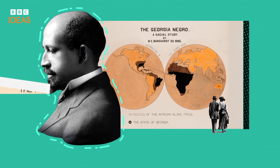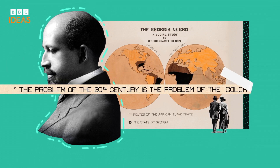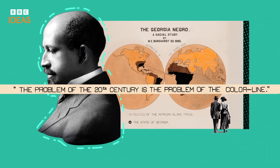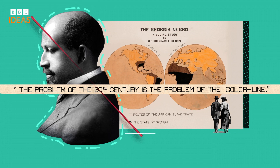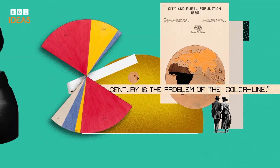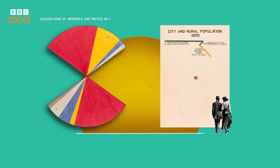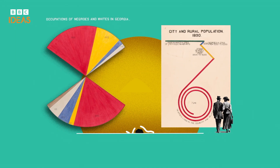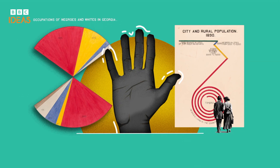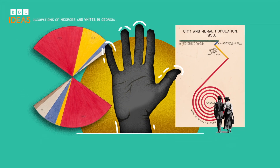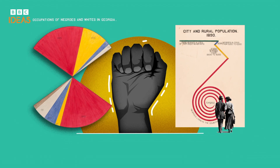Du Bois hoped the visualisations would help to end racial prejudice in the world. "The problem of the 20th century is the problem of the colour line," he wrote. Although his dreams weren't realised, Du Bois' beautiful charts are now recognised as a powerful use of data visualisation to demonstrate social change.